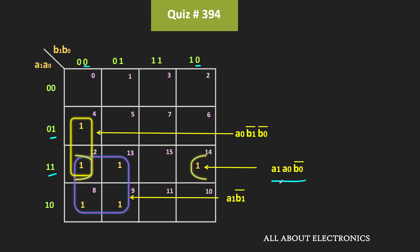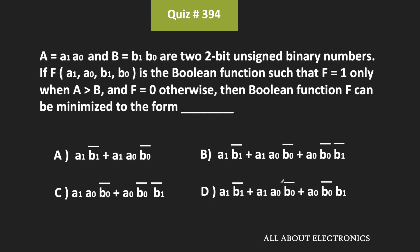The overall minimized expression is the summation of all these groups. That means f = a1 · b1̄ + a1 · a0 · b0̄ + a0 · b1̄ · b0̄. That is the minimized expression for the given Boolean function, and from this we can say that for the given question, option B is the correct answer.